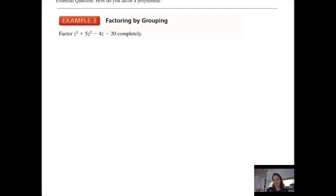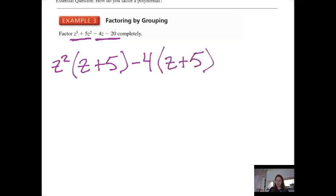Example 3 is factoring by grouping, and this might be new. We're going to be factoring a four-term polynomial, so we can't use the quadratic trinomial method. First, we do look for a GCF—don't see one—so factoring by grouping means I'm going to find the GCF in the first two terms and then find the GCF in the second two terms. The GCF of the first two terms is z squared, and I'm left with z plus 5. GCF in the second two terms is negative 4, and I am left with z plus 5. And now something interesting happens. I have the same binomial.